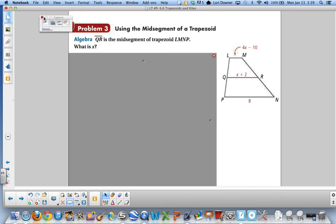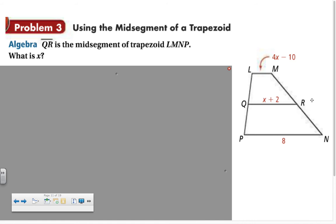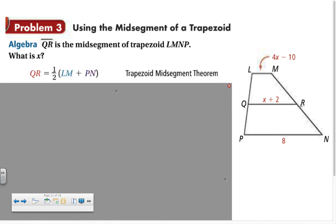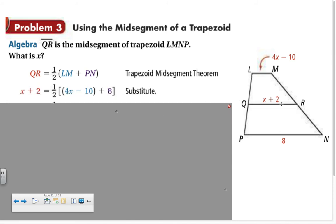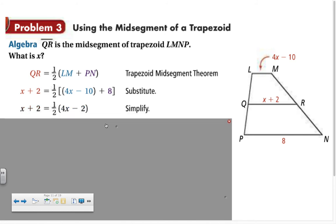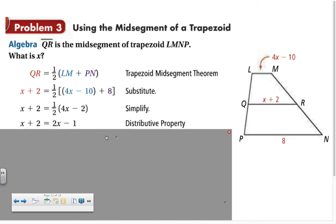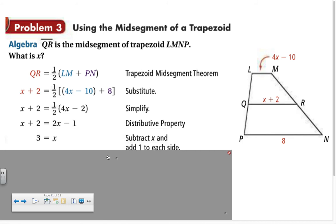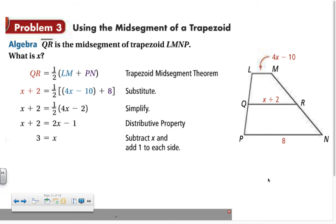For example, QR is the mid-segment of trapezoid LMNP. Using the formula, QR equals one-half times (LM plus PN). Plugging in values: X plus 2 equals one-half times (4X minus 10 plus 8). Simplifying inside the parentheses gives negative 2, then distributing the one-half and solving gives X equals 3. This answers the question using the mid-segment property.